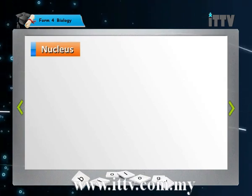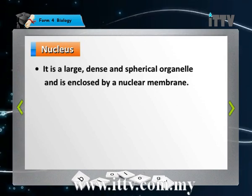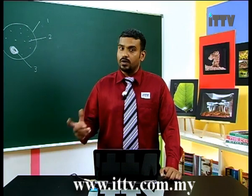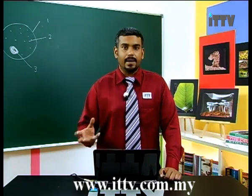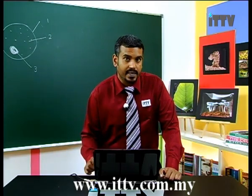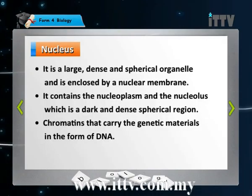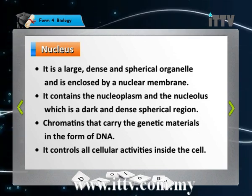The nucleus is a large, dense, and spherical organelle enclosed by a nuclear membrane. It contains a nucleoplasm and a nucleolus, which is dark and dense. At your level you don't need to remember the function of the nucleolus — just know it exists. What is more important is the chromatin: chromatins carry genetic materials in the form of DNA and control all cellular activity inside the cell.